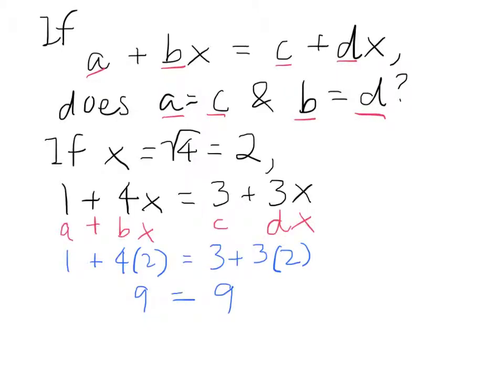So let's say that our x is going to be a radical, but in this case it's a rational radical, square root of 4, which is equal to 2. And so we could set it up. We've got our a plus bx.